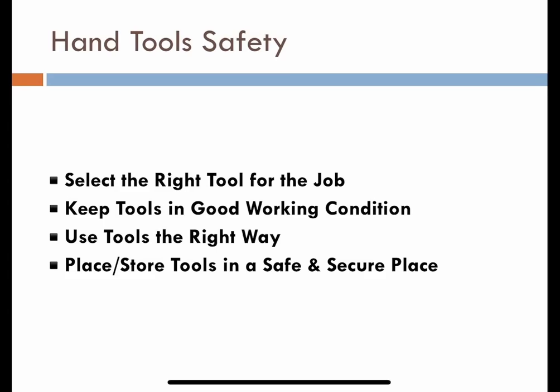Our next topic is hand tool safety. Select the right tool for the job. Examples of unsafe practices include striking hardened faces of hand tools together — such as using a carpenter's hammer to strike another hammer, hatchet, or metal chisel — using a file as a pry bar, a wrench as a hammer, or a cheater on pliers instead of the proper wrench.